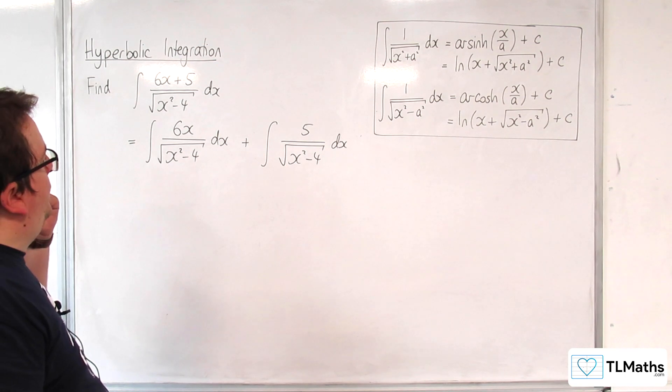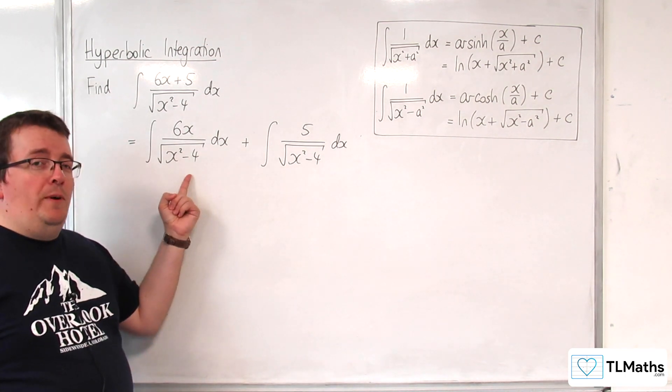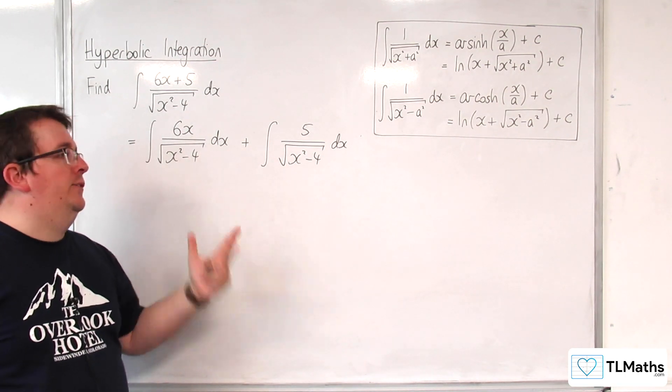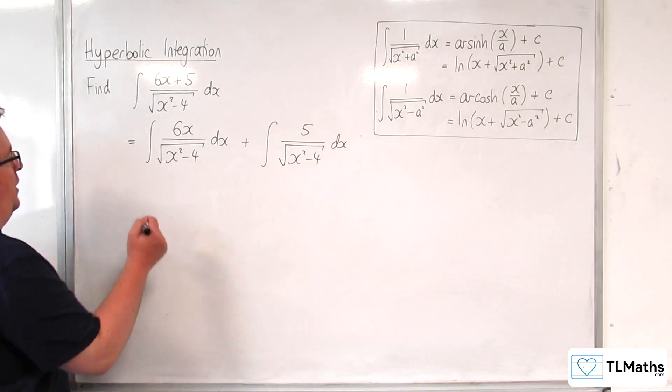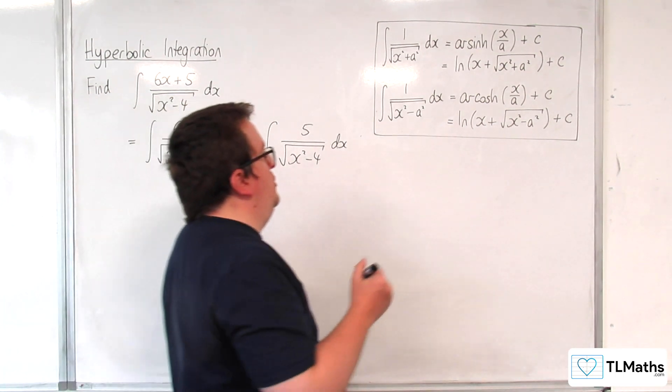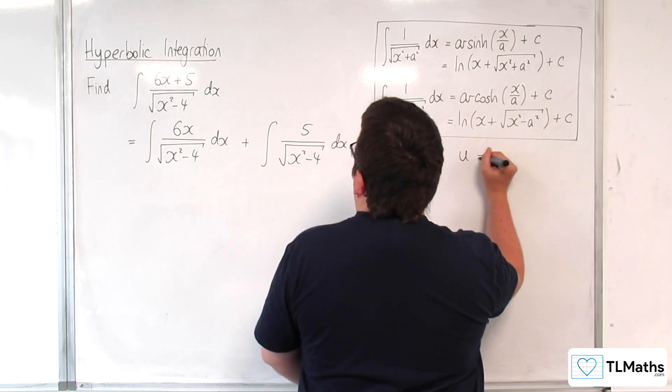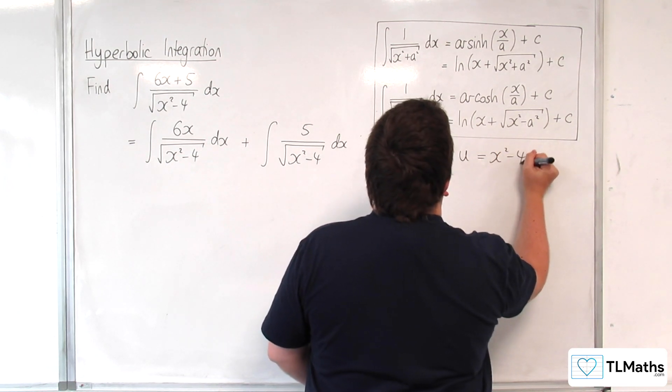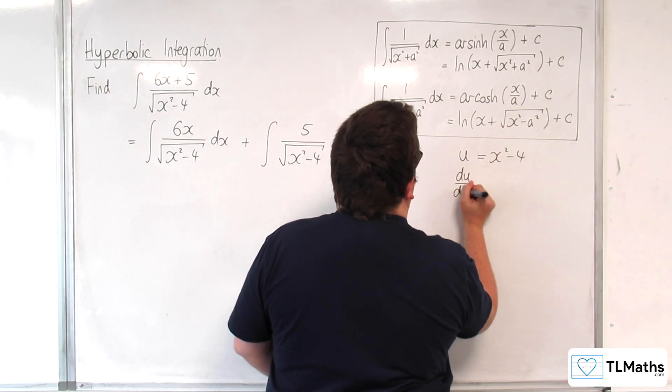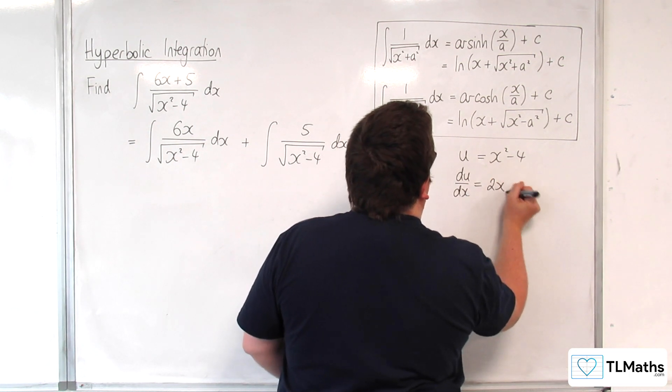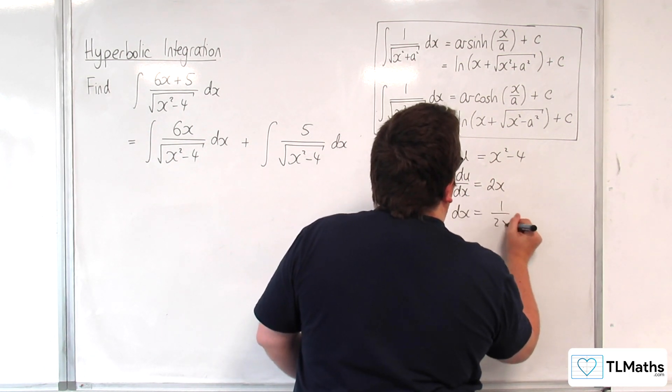So let's work with this one. We'll do it by substitution just in case people aren't too confident on it. So let's integrate that by substitution so u would be equal to the x squared take away 4 so du by dx is equal to 2x so dx is 1 over 2x du.